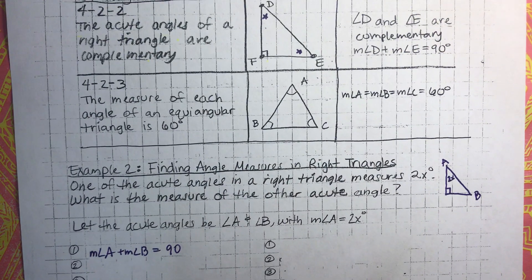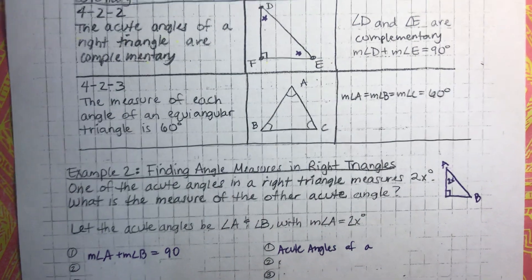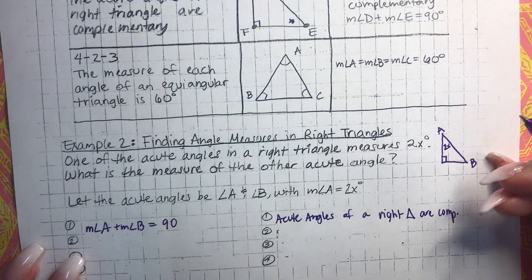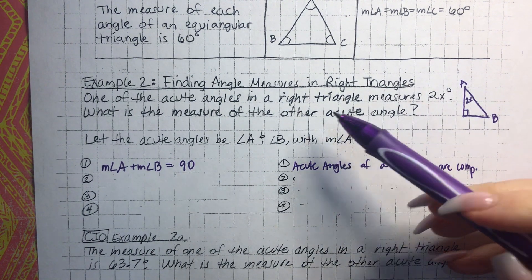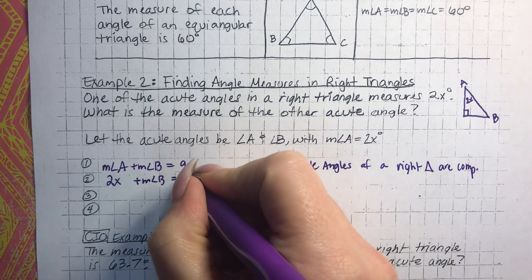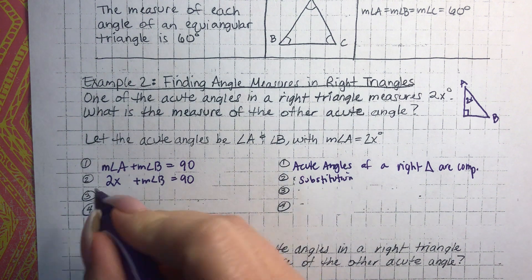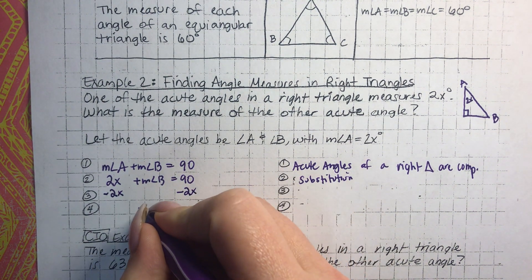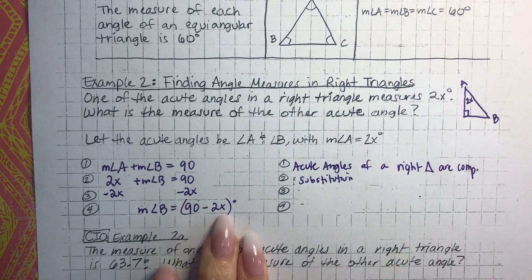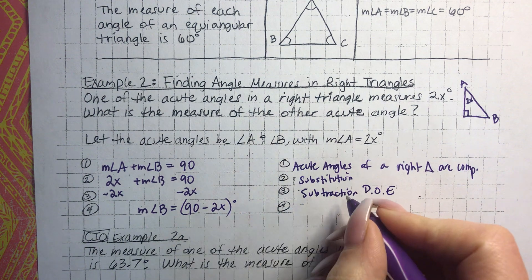The acute angles of a right triangle are complementary. Now we substitute in the given information: 2X plus measure of angle B equals 90. Then we subtract 2X from both sides — subtraction property of equality — and we are left with the measure of angle B equals 90 minus 2X. And then simplify.